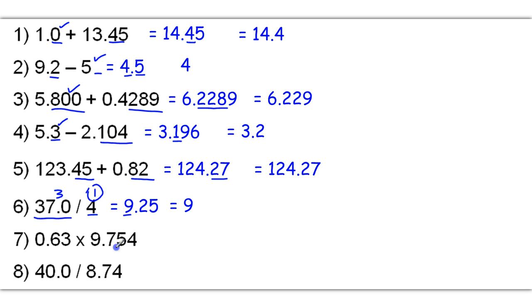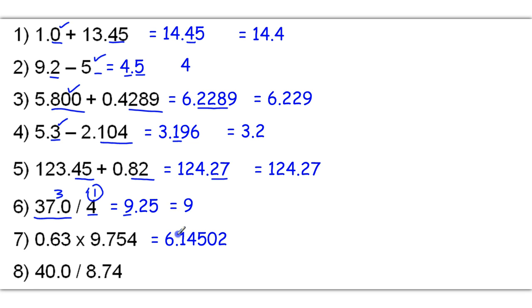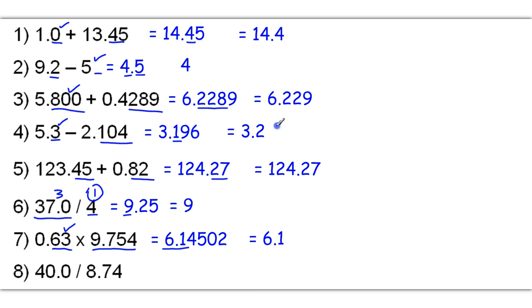0.63 times 9.754 gets me a raw answer of 6.14502. Again, we're multiplying, so the answer is rounded to least sig figs. This has 2 sig figs, this has 4 sig figs. So I want to round off to have 2 significant figures. The 1 followed by a 4 will remain a 1, and so our final answer is 6.1.